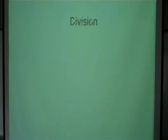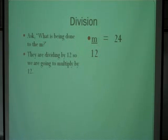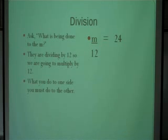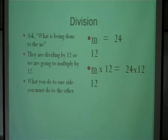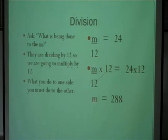Let's work one more. m divided by 12 equals 24. What is being done to the m? We're dividing by 12. Since we're dividing by 12, we have to multiply by 12 to get rid of it. What you do to one side, you must do to the other. The left side cancels out, leaving just m. The right side gives our answer: 24 times 12 is 288, so m equals 288.